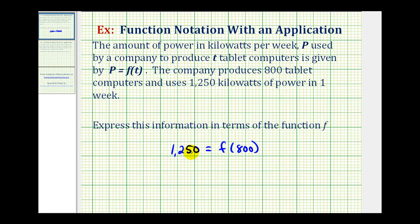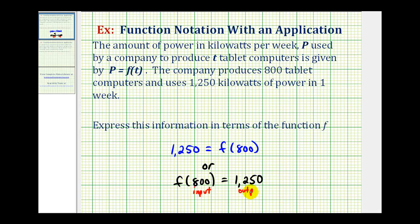But often you'll see this switched around. We can also write F of 800 equals 1250. The input is the number of computers produced in one week, and the output is the number of kilowatt hours used.